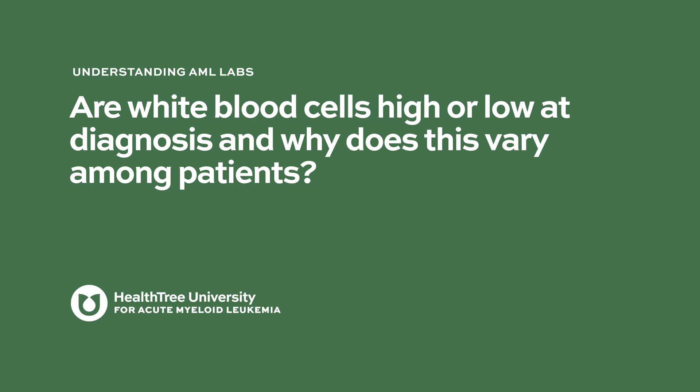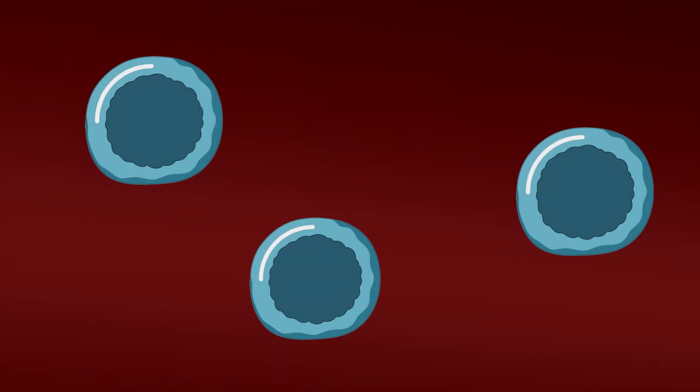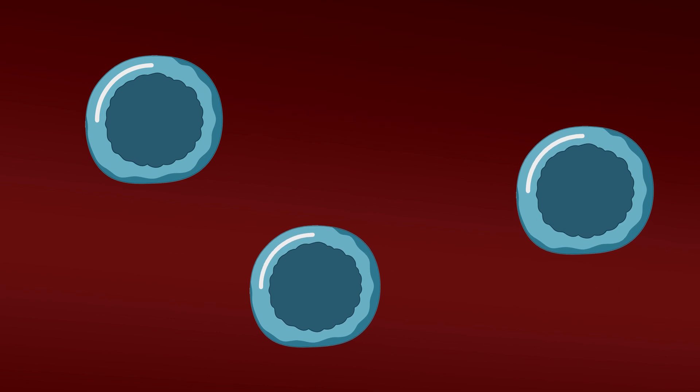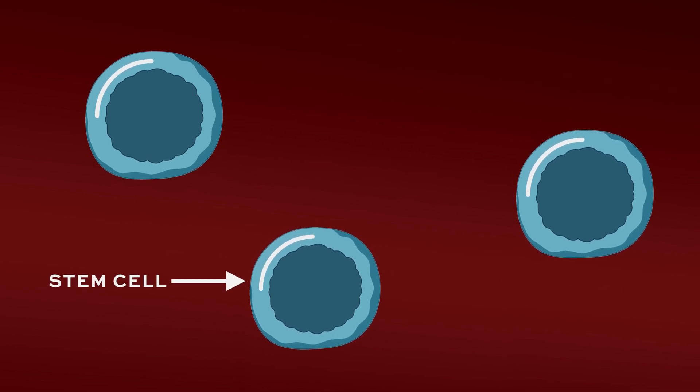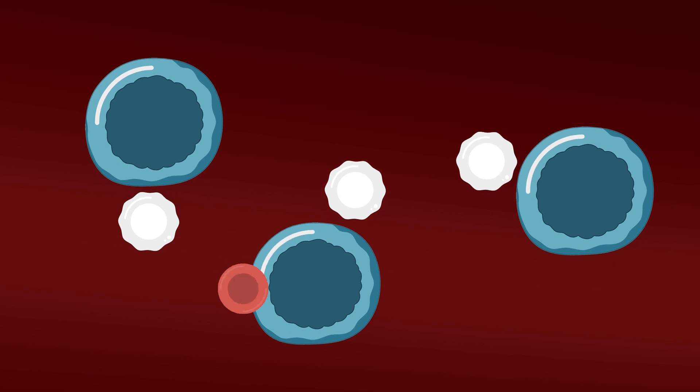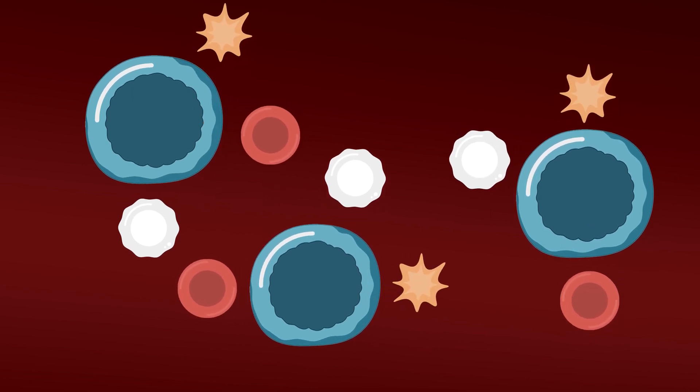Are white blood cells high or low at diagnosis, and why does this vary among patients? In acute myeloid leukemia the problem is bone marrow dysfunction. Within our bones there's a liquid portion containing stem cells that create our blood — our white blood cells, red blood cells, and platelets. AML is a disorder of the myeloid lineage, devoted to white blood cells, red blood cells, and platelets, and within this disorder there is dysregulation.